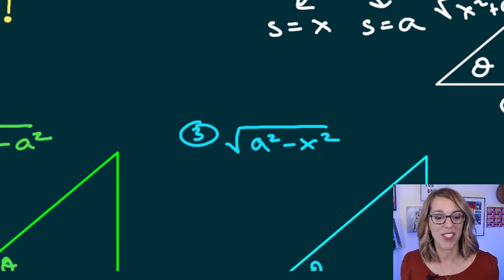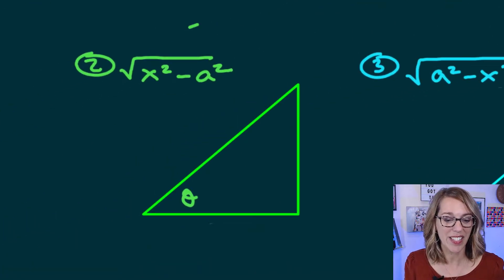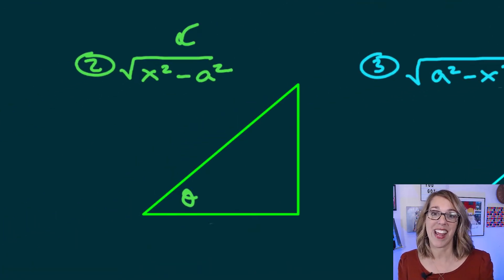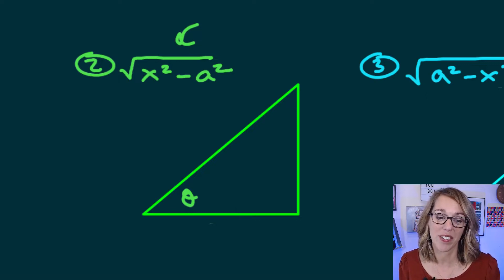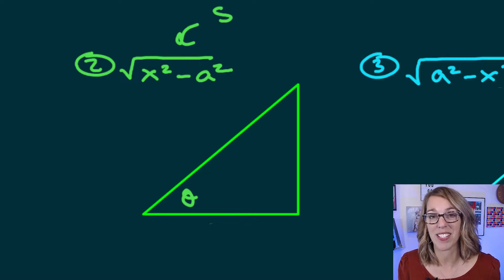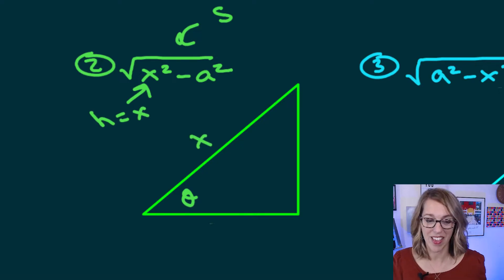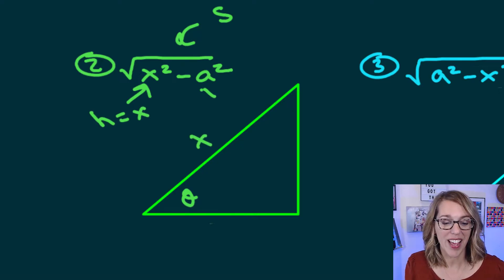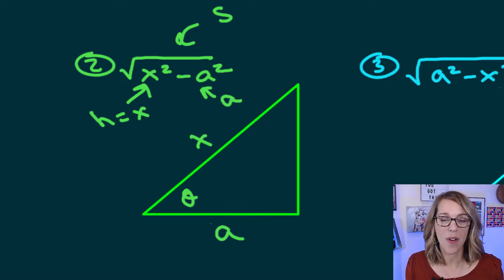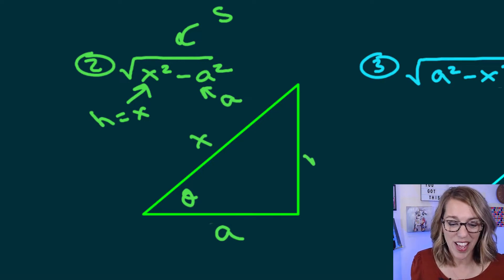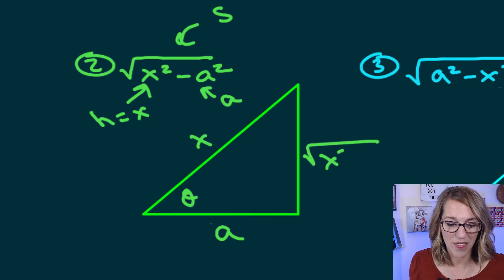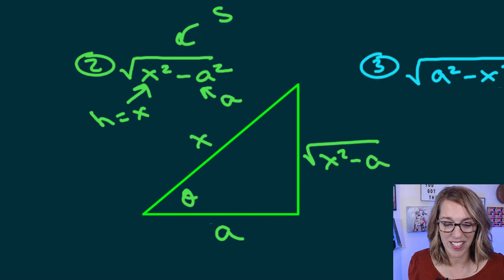Now let's move on to the second type. Here I've got x squared minus a squared — a difference of squares. This tells me that this square root is not the hypotenuse; instead, it's one of the sides. x is going to represent the hypotenuse, so the hypotenuse equals x. The other side is a, which is a constant, so it goes on the horizontal leg, and the vertical side is the square root of x squared minus a squared.